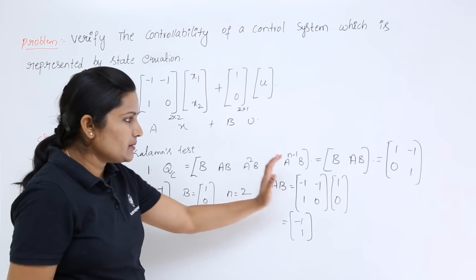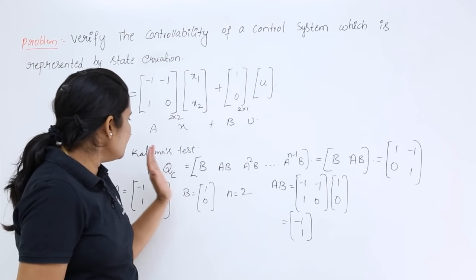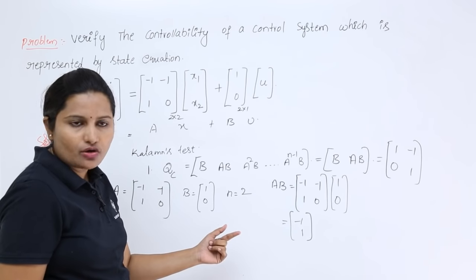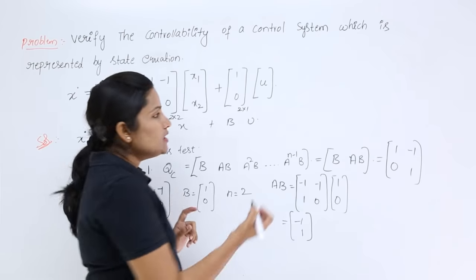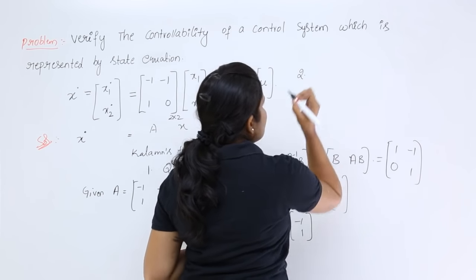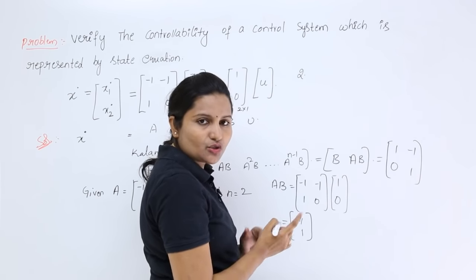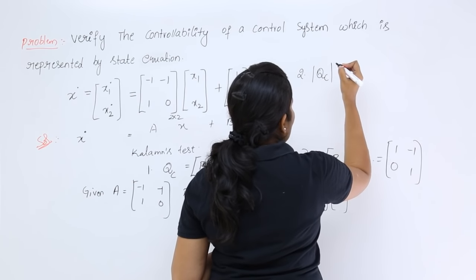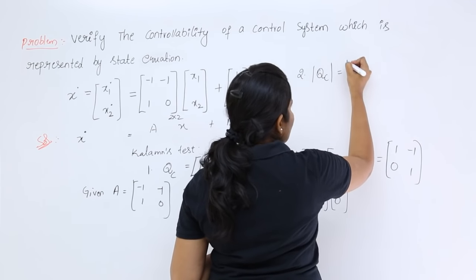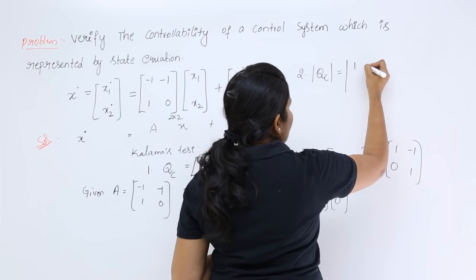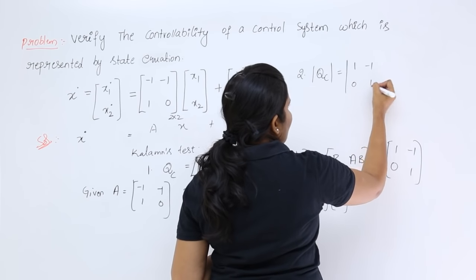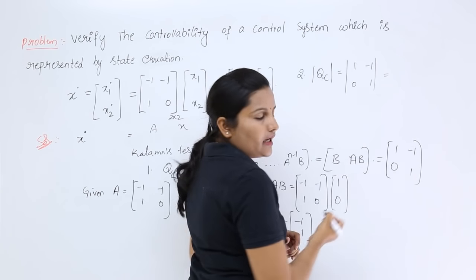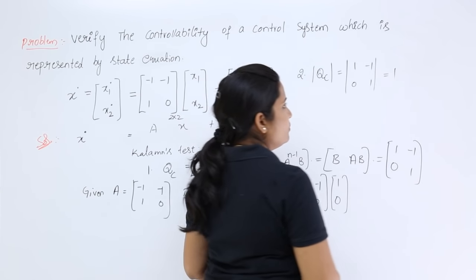The second step in the controllability test is to take the determinant of QC. Taking the determinant of QC = [1, -1; 0, 1], we apply AD - BC, which gives (1)(1) - (-1)(0) = 1.